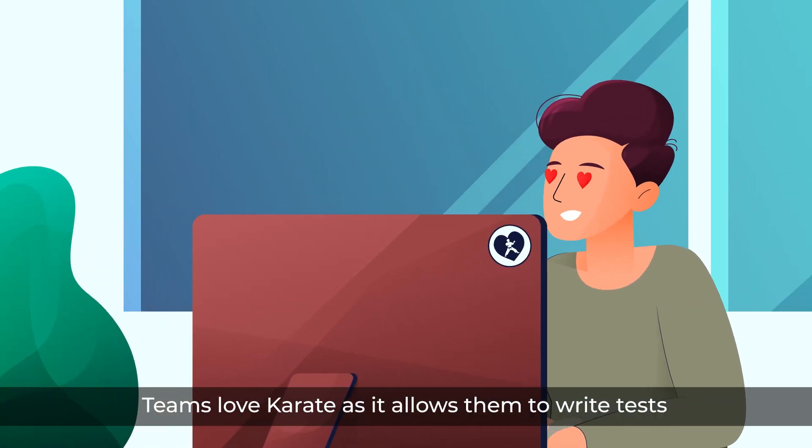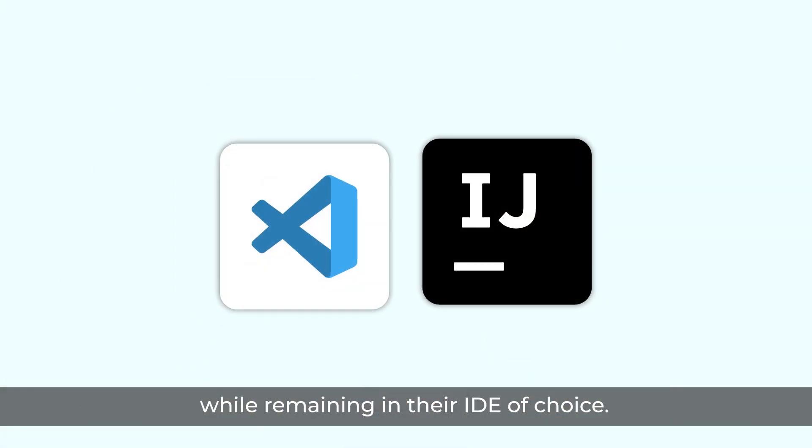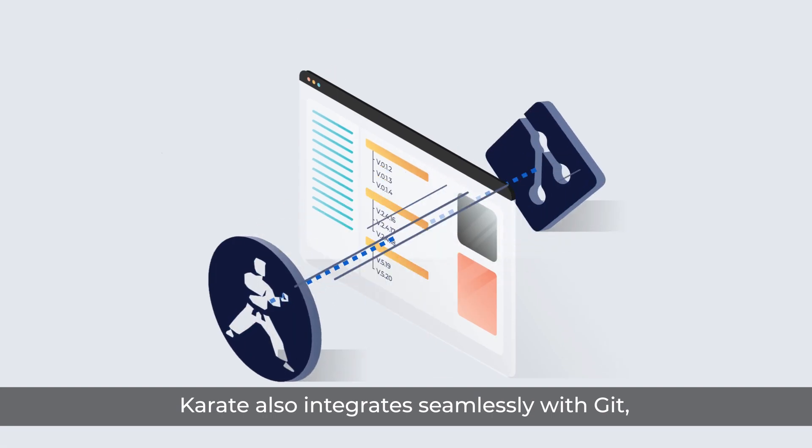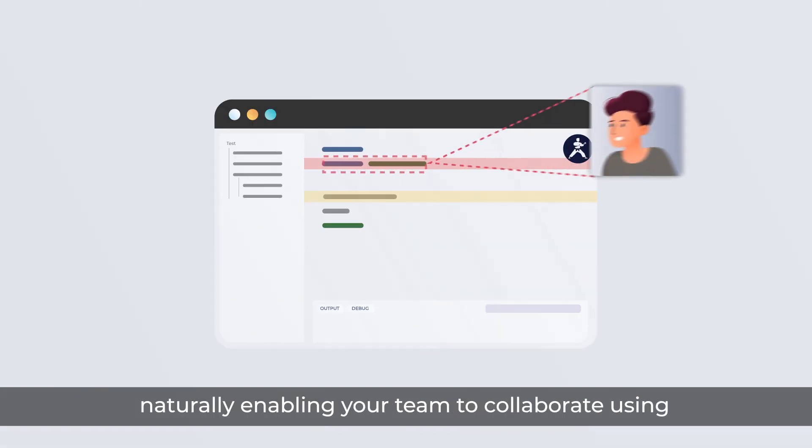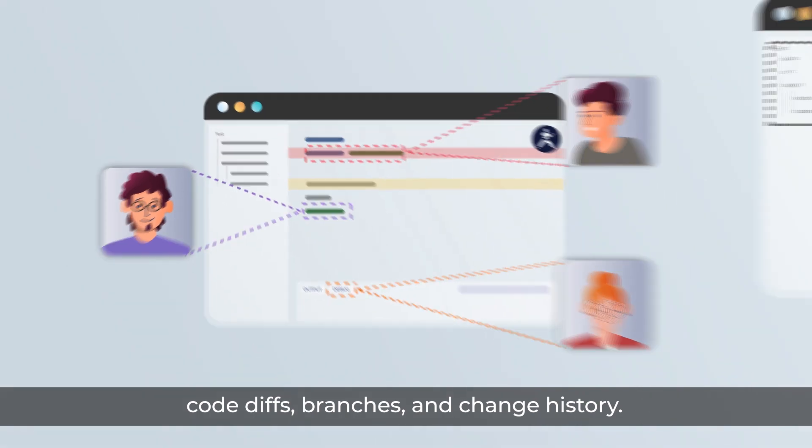Teams love Karate as it allows them to write tests while remaining in their IDE of choice. Karate also integrates seamlessly with Git, naturally enabling your team to collaborate using code, diffs, branches and change history.